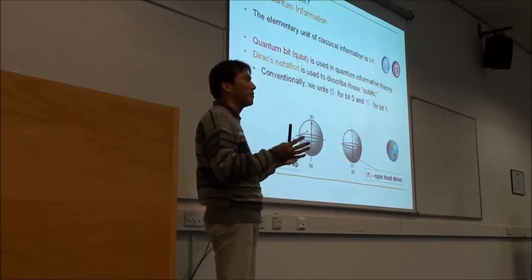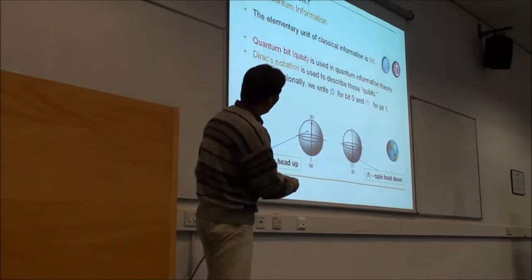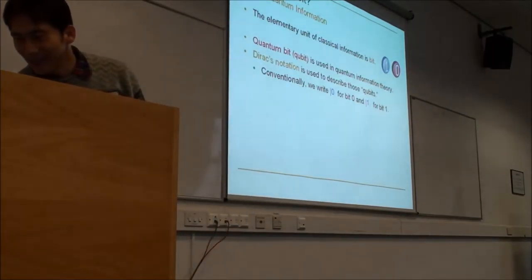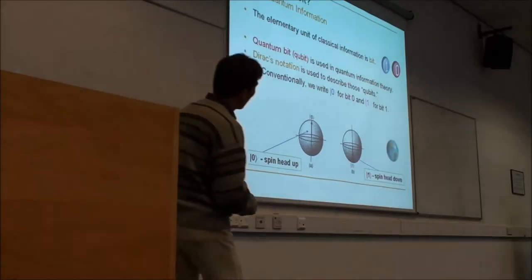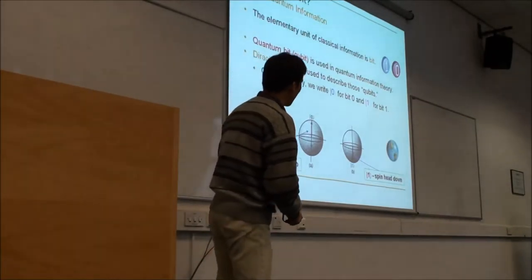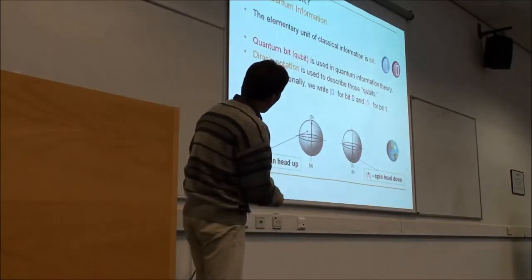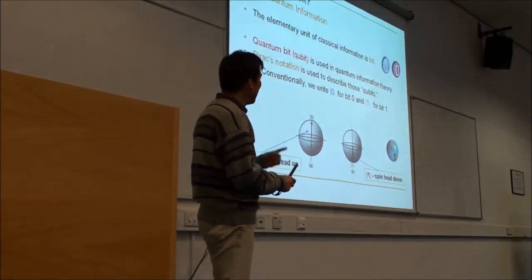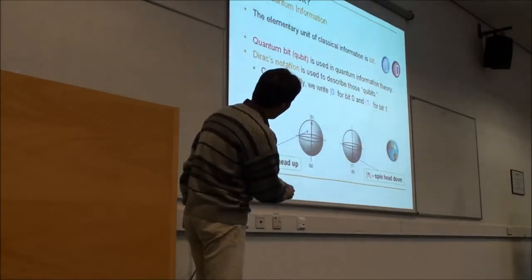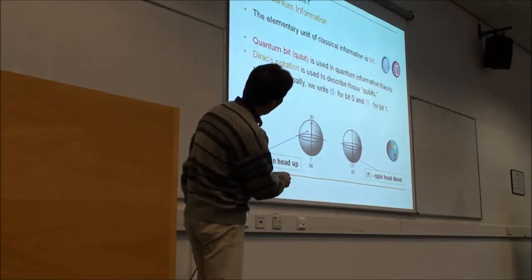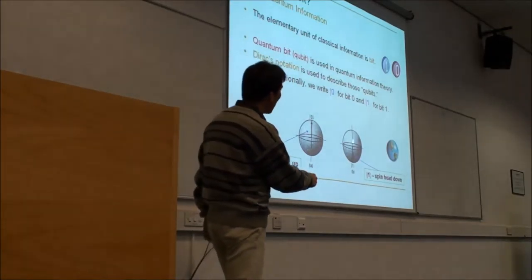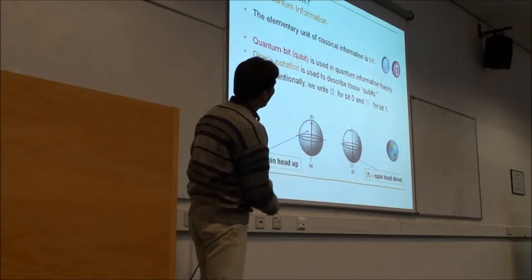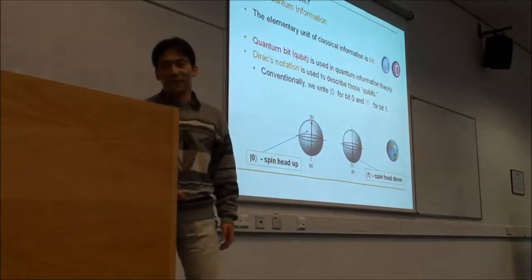If you look at a very tiny particle, like an atom, we can decide the direction the spin is pointing. If the spin is pointing up, we consider this bracket 0. If the spin goes down, we consider this bracket 1. So these two states represent the classical 1 and 0.